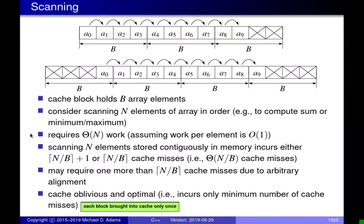The first example of a cache-oblivious algorithm I'd like to consider is a scanning algorithm. We have a one-dimensional array of n elements — in this case n equals 10 — with elements a0, a1, up to a9. We want to iterate over each element and access its value. The value b corresponds to the number of array elements that fit in a single cache block. In this diagram, b equals 4 because elements a0 through a3 fit within a single cache block.